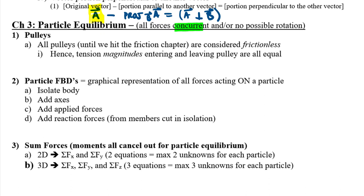All of particle equilibrium is essentially force equilibrium. The fundamental equation is the sum of all forces equals zero — two equations for 2D or three equations for 3D. In chapter three, we also looked at frictionless pulleys, which simply transmit tension from one side to the other. If you have a bunch of frictionless pulleys chained together, you have the exact same tension along the entire length of cable.